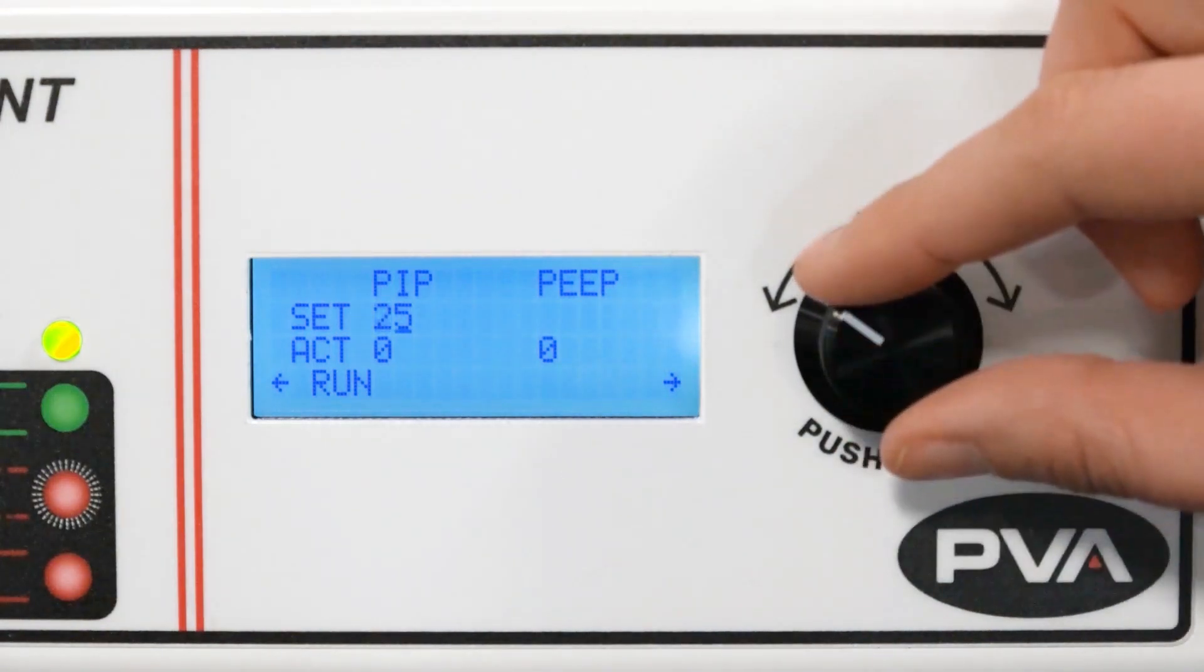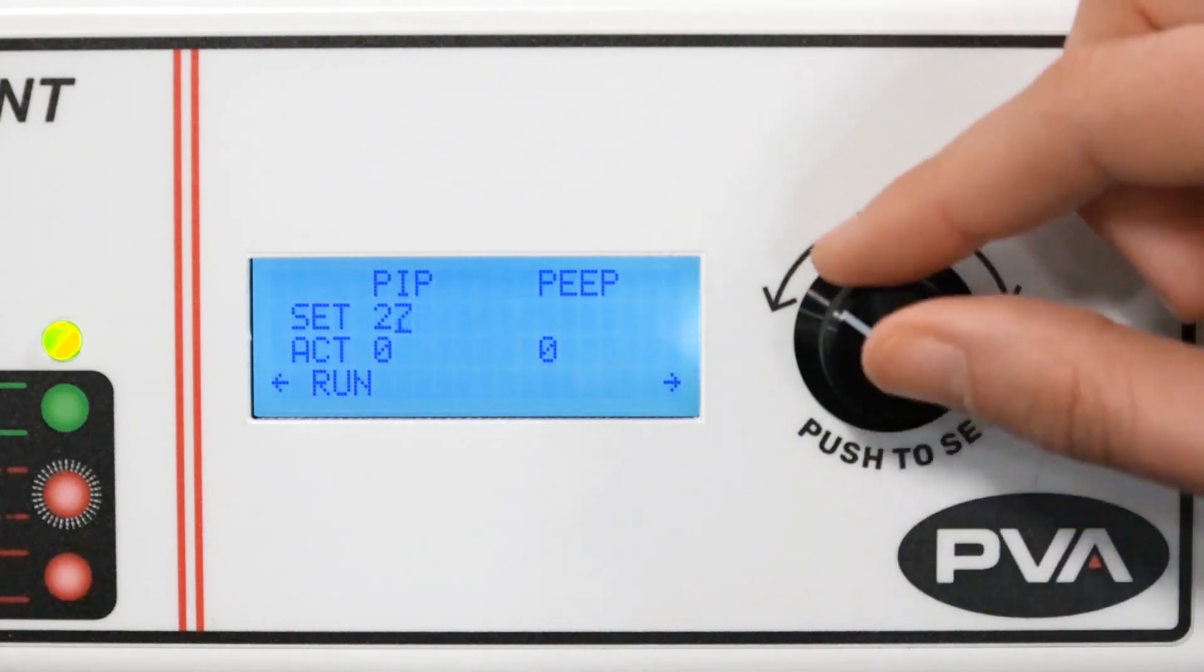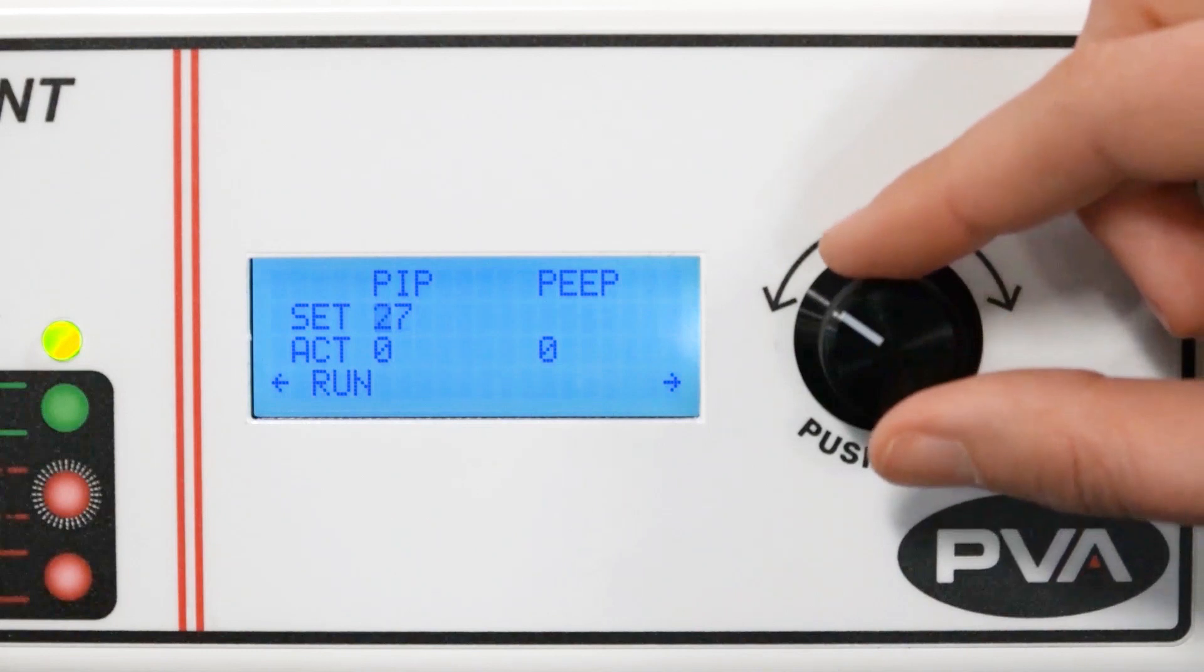On this screen, you will set your peak inspiratory pressure, also called PIP. The positive end expiratory pressure will be set manually on the peep valve.